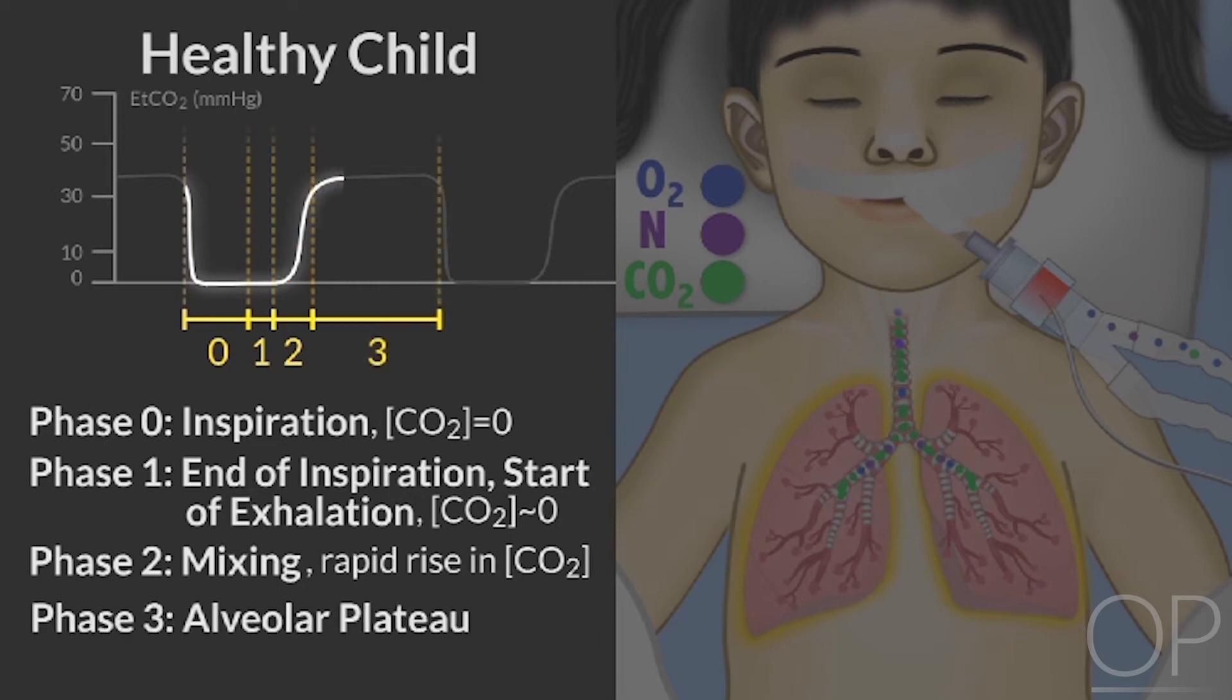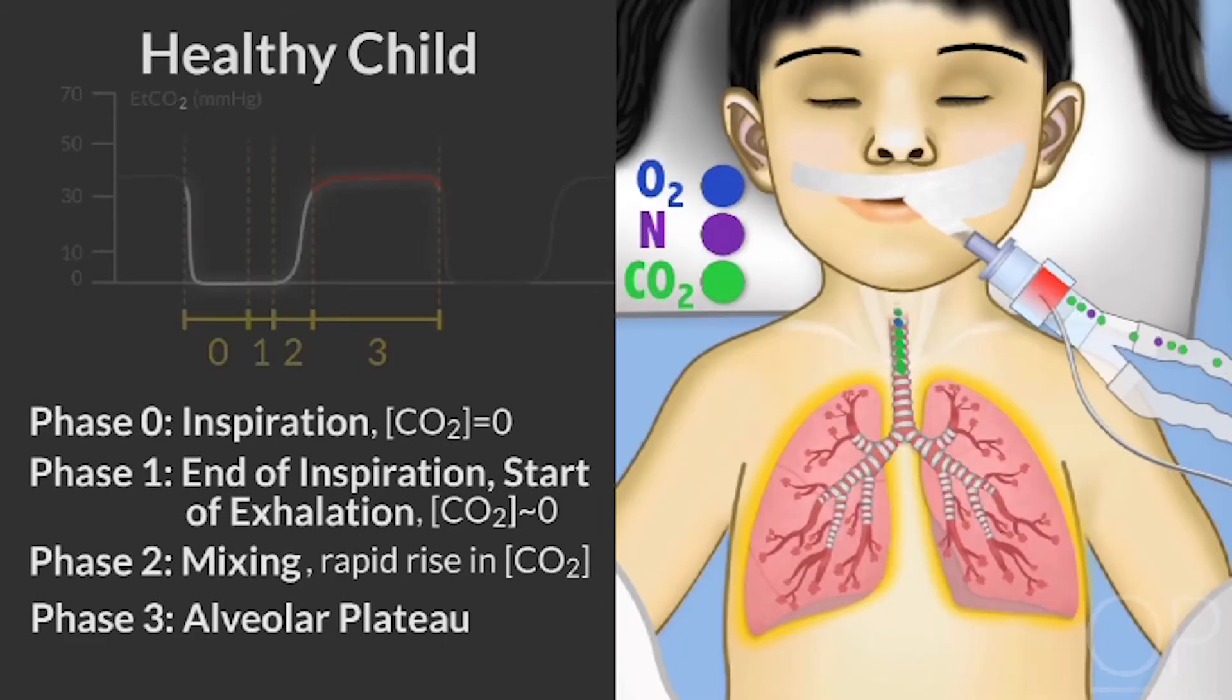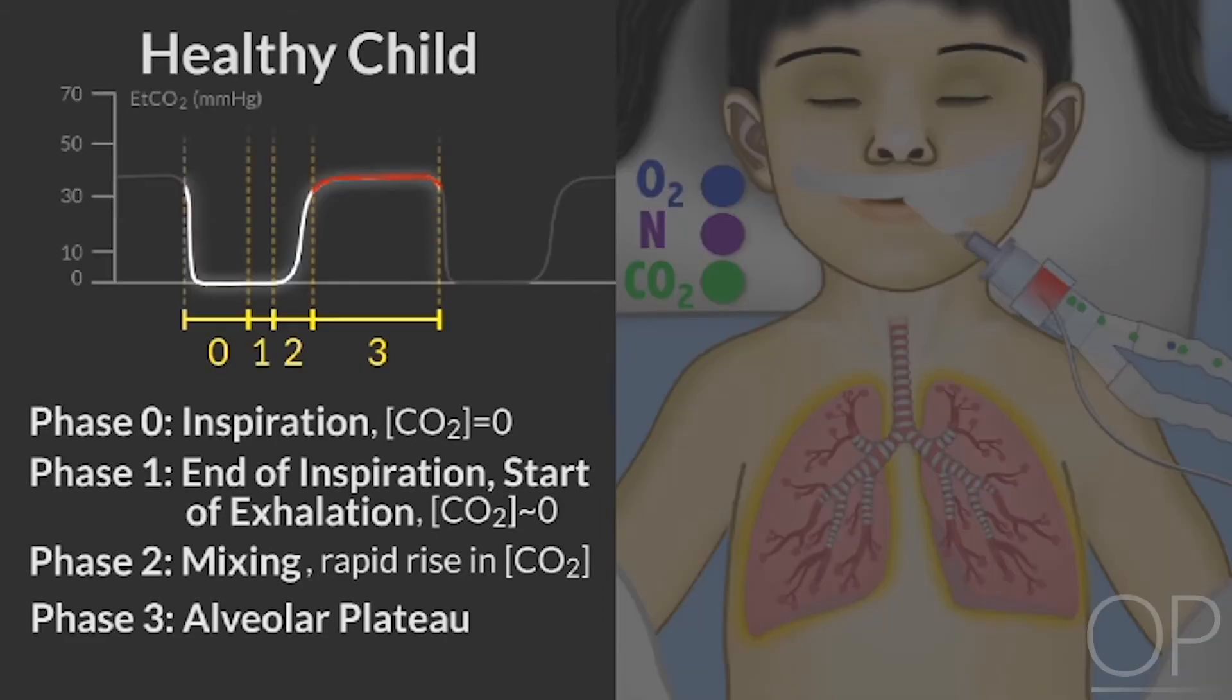The third and final phase of the capnogram is the alveolar plateau phase. The volume contained in this phase contains alveolar gas. You can see here that there is basically no movement or really observable changes in CO2 concentration from the beginning to the end of the breath.